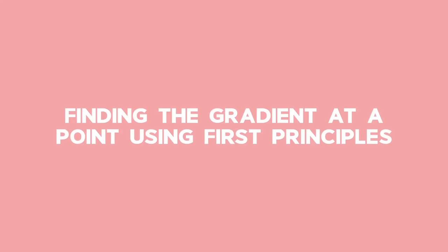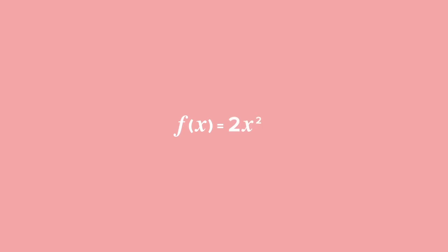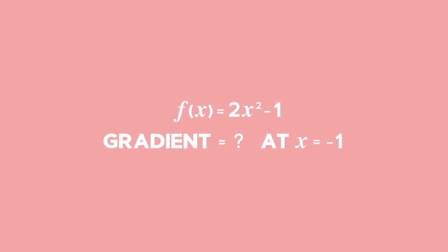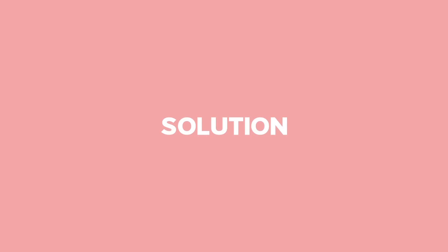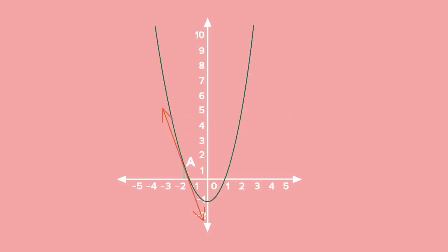Example 2: Finding the gradient at a point using first principles. Find the gradient of the function f of x equals 2x squared minus 1 at the point where x equals negative 1. This is a geometric interpretation of the question. To find the gradient of the function at x equals negative 1, we need the expression that represents the gradient from first principles.